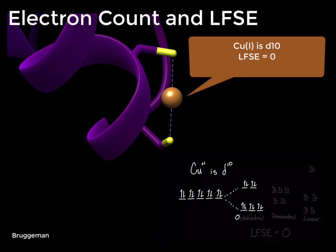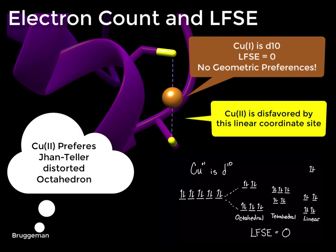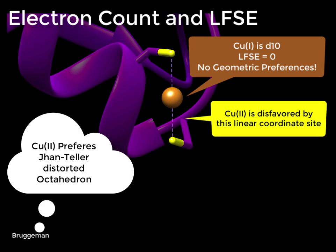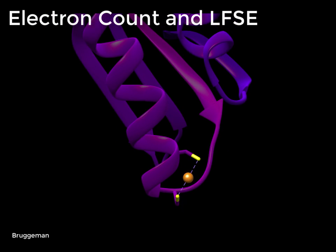This ligand field stabilization energy of zero means that copper 1 has no energy preference for one binding geometry over another. Thus, copper 1 will bind linearly to the chaperone when copper 2, which is a D9 metal with a non-zero ligand field stabilization energy, will not.